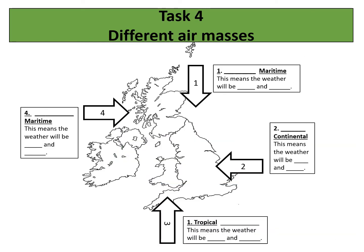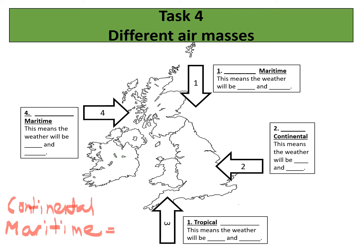Task four is our final task, and we need to know the names of the different air masses. There are lots of different air masses to be aware of and they have two names: they're either classed as a continental air mass or a maritime air mass. Maritime is to do with boats — the sea and water — whereas continental is to do with the land. If they're traveling over water they're going to bring wet air, whereas if they're traveling over land they'll bring very dry air.